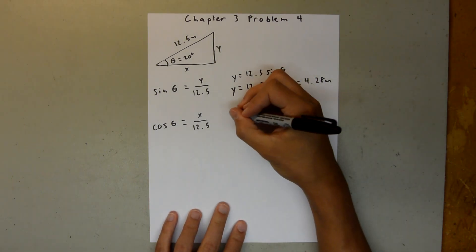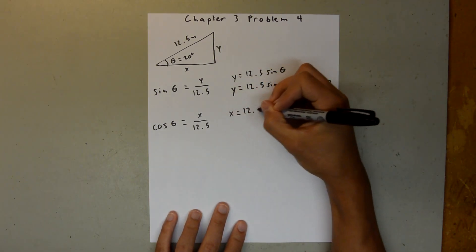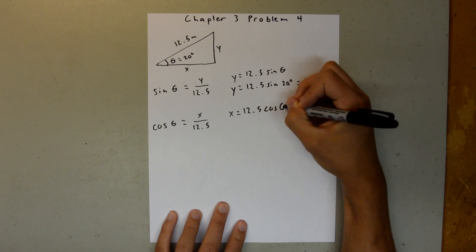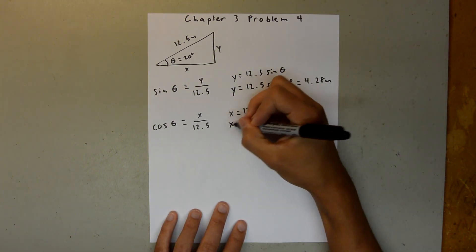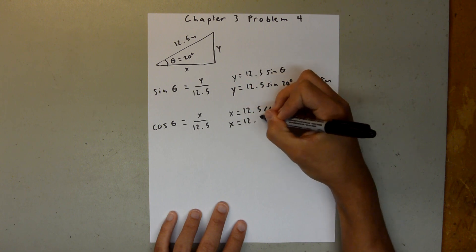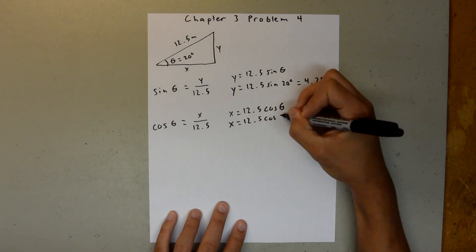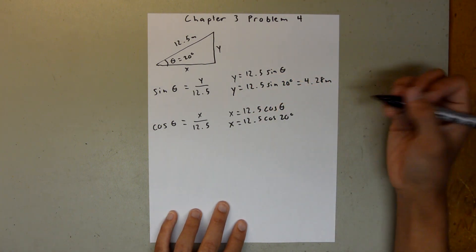So now we can solve for x and say x is equal to 12.5 cosine theta. And then we can plug in our angle and say cosine of 20 degrees. Again, just make sure you're in degree mode.